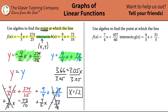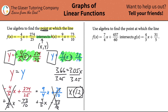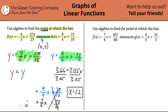Now that we know x, we need to find y to complete the point. We can take this x value and plug it into either equation — it doesn't matter which one. Since the x values are the same at the intersection and the y values are also the same, plugging 1.2 into either equation should give the same y. You can test that yourself.